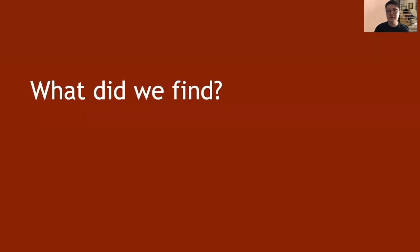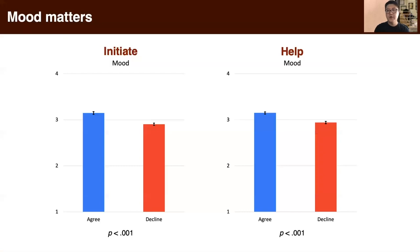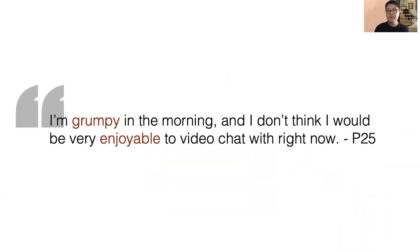We analyzed the data using logistic regressions with repeated measures, using predictors such as mood, location, perception, and presence of others to predict participants' perceived willingness to agree or decline the prompt. We found that mood matters: for both the initiate and help prompts, participants' mood was better when they agreed. Participant quotes suggest that mood affects the willingness to use video chat for authentication, and that an unpleasant mood would make someone unlikely to accept a help request.